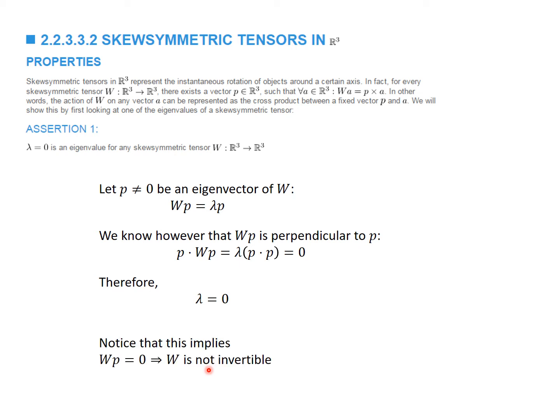This of course also implies that W is a matrix that is not invertible — it cannot be inverted.